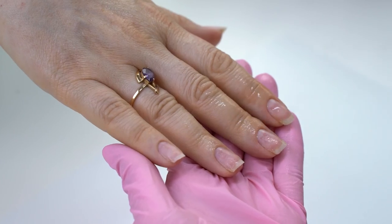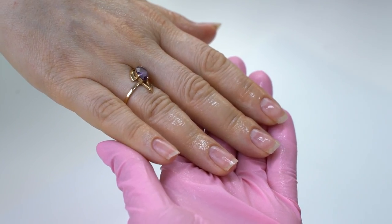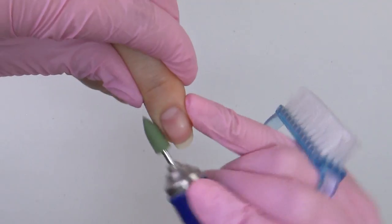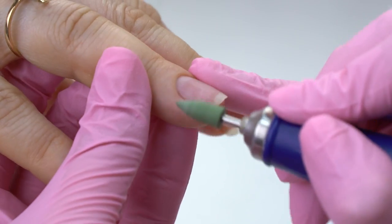So I apply some sanitizer and polish the skin. I'm using a medium green silicone carbide drill bit. If the skin is drier, you can use a grey one.